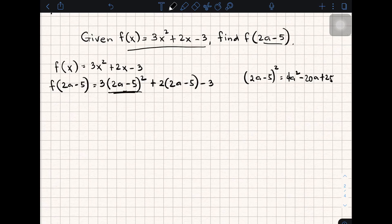So this part is equal to 4a² - 20a + 25. We have 3 times (4a² - 20a + 25). And then this time, we will distribute this one. As you can see, we have 4a, 2 times 2a, and then 2 times -5, that is -10, minus 3.